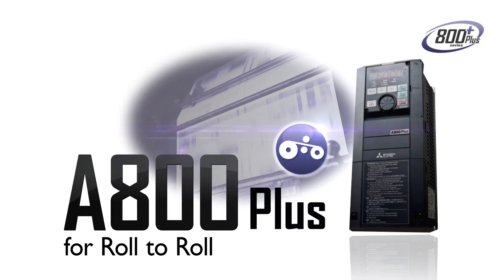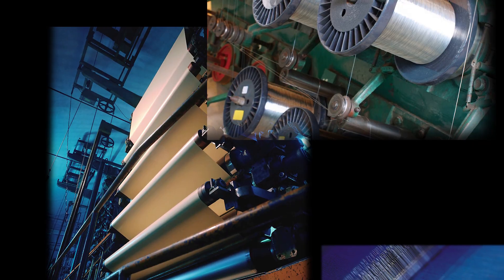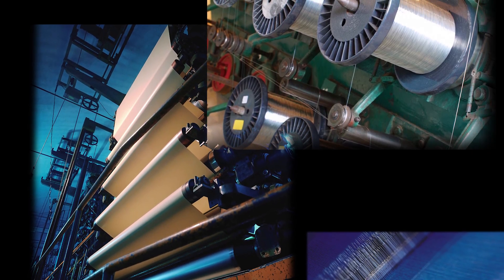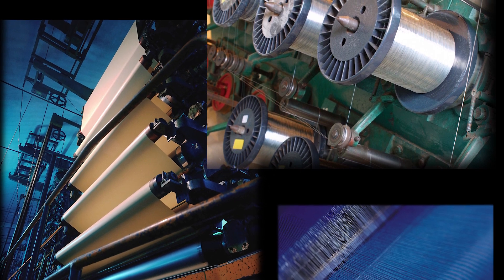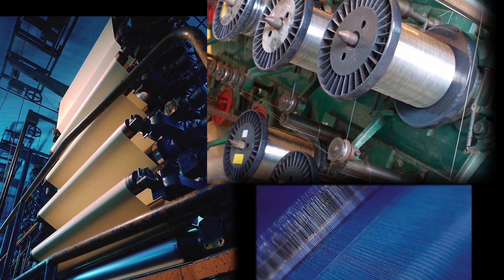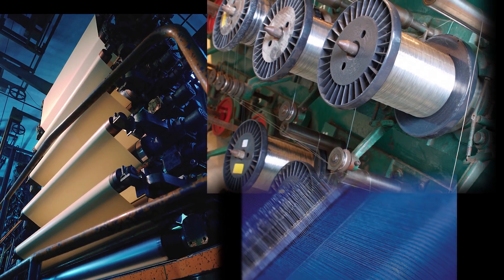The Mitsubishi Electric FRA800 Roll-to-Roll Inverter has functions perfectly suited for winding and unwinding and it can also increase the productivity of a wide variety of systems incorporating wire drawing machines and printers.